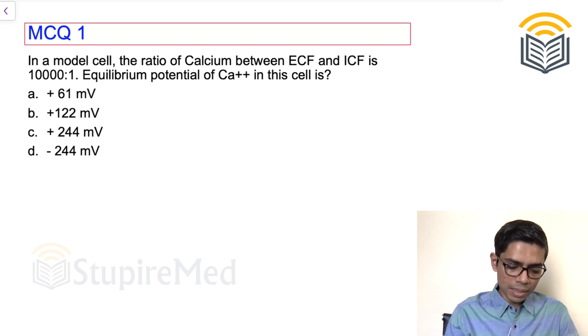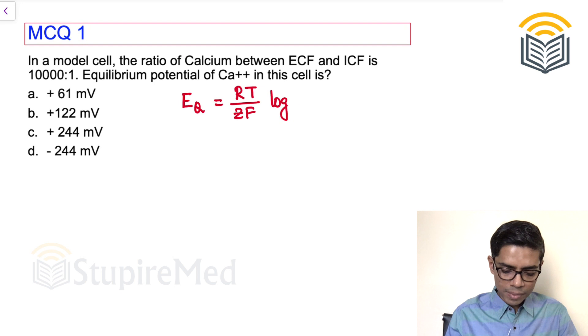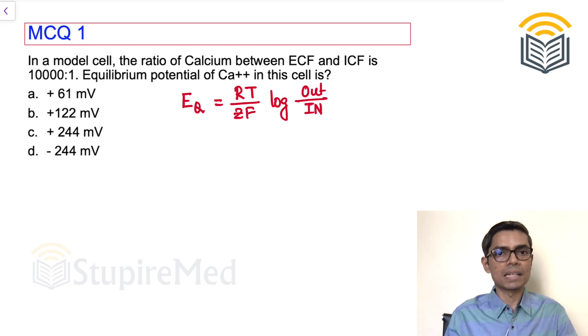All of you know that this will be calculated based on the Nernst equation, which is saying that equilibrium potential is equal to RT/ZF log of concentration of the ion outside the cell upon concentration of the ion inside the cell.